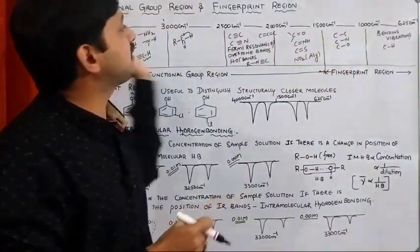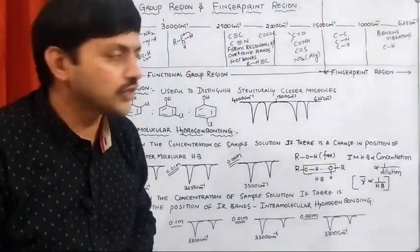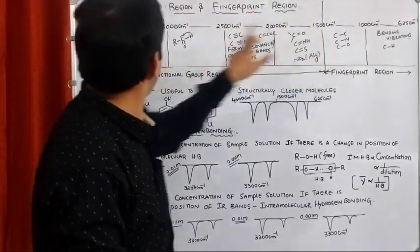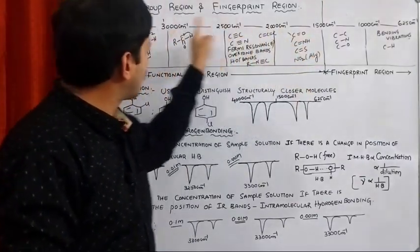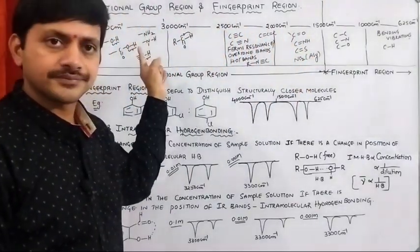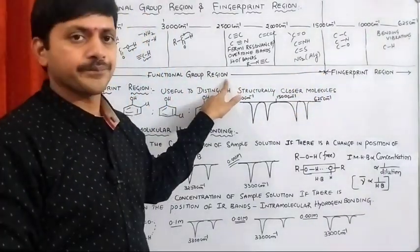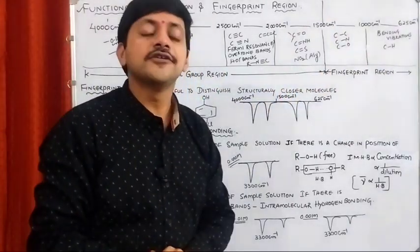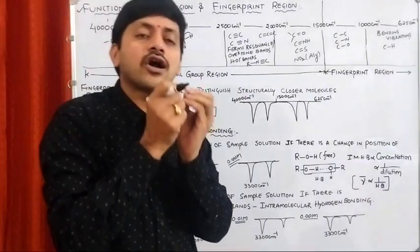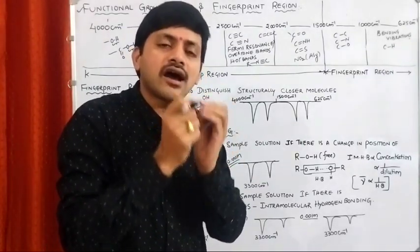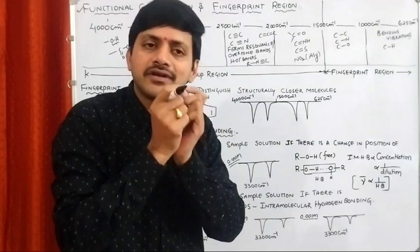This overall region is divided into two portions: the fingerprint region and functional group region. In between 1500 to 4000 cm⁻¹, all are related to functional groups, which is why this region is commonly called the functional group region. Below this region is commonly called the fingerprint region. Whatever organic functional group we have, all the bonds present have particular vibrations.